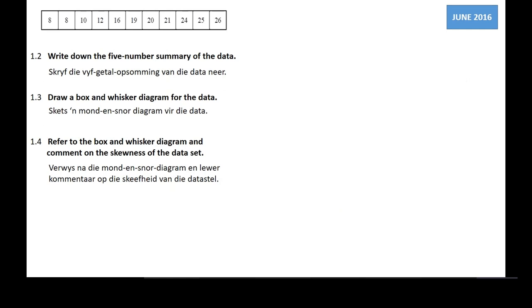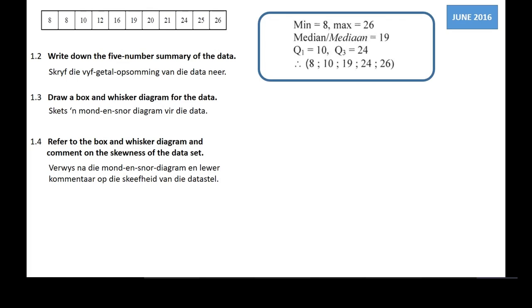Now we want to write the five-number summary for the same data set. The data has already been organized from small to big, so the minimum is 8 and the maximum is 26. We have 11 numbers, so the sixth number will be our median — that's 19. We can then ignore the 19. To the left we have five data points, so the third from the left — which is 10 — will be Q1. The third from the right — 24 — will be Q3. Therefore the five-number summary is 8, 10, 19, 24, 26.